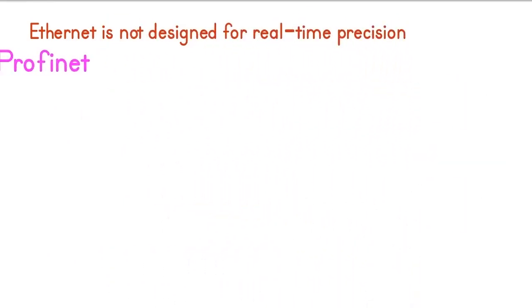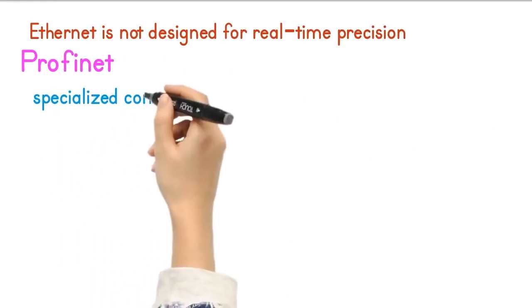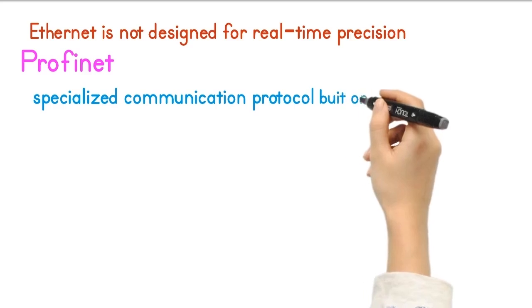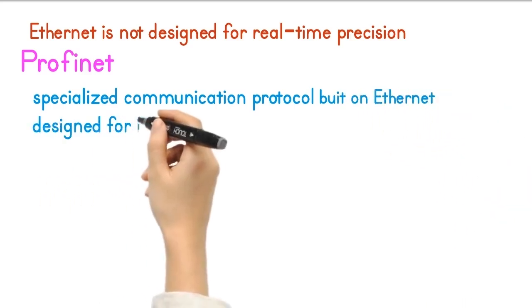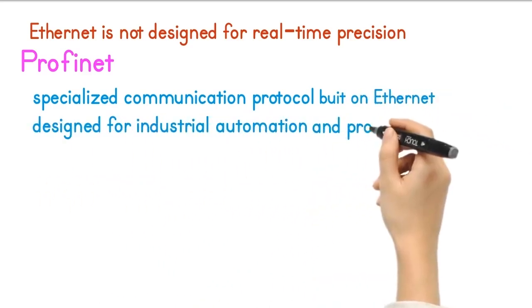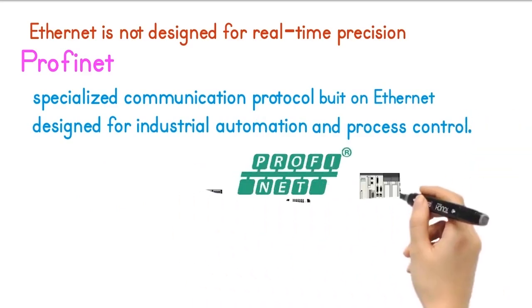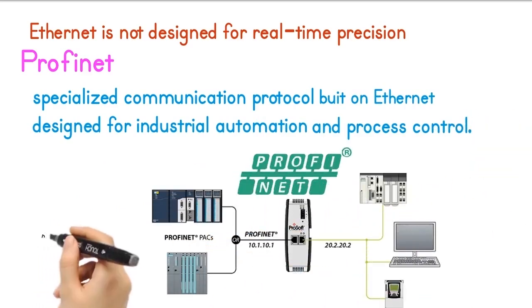Profinet is a specialized communication protocol built on Ethernet. It's designed for industrial automation and process control. Profinet is designed for factory automation, machinery control, and industrial equipment.